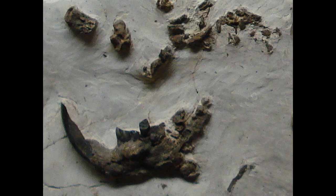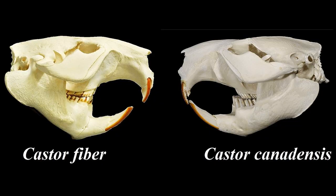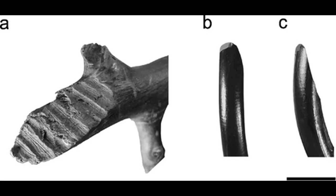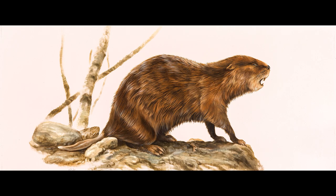Early Castorines, like Steneofiber, have cheek teeth similar to the Paleocastorines, but also primitive semi-aquatic adaptations. These adaptations would of course become more pronounced with time. There are two modern species of beavers: the North American beaver, Castor canadensis, and the European beaver, Castor fiber. So, when did beavers attain their famous tree processing abilities? Most fossil evidence of beaver tree processing is Pleistocene in age, and typically attributed to Castor. But the oldest evidence comes from the beaver Dipoides from the early Pliocene.